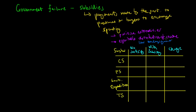By subsidising businesses, it helps those businesses create jobs and also maintain jobs, and that helps people to live a reasonable standard of living. So that's the rationale behind why governments subsidise both producers and buyers — they want to encourage certain consumption of goods and services, keep unemployment low, and maintain the equitable distribution of income.